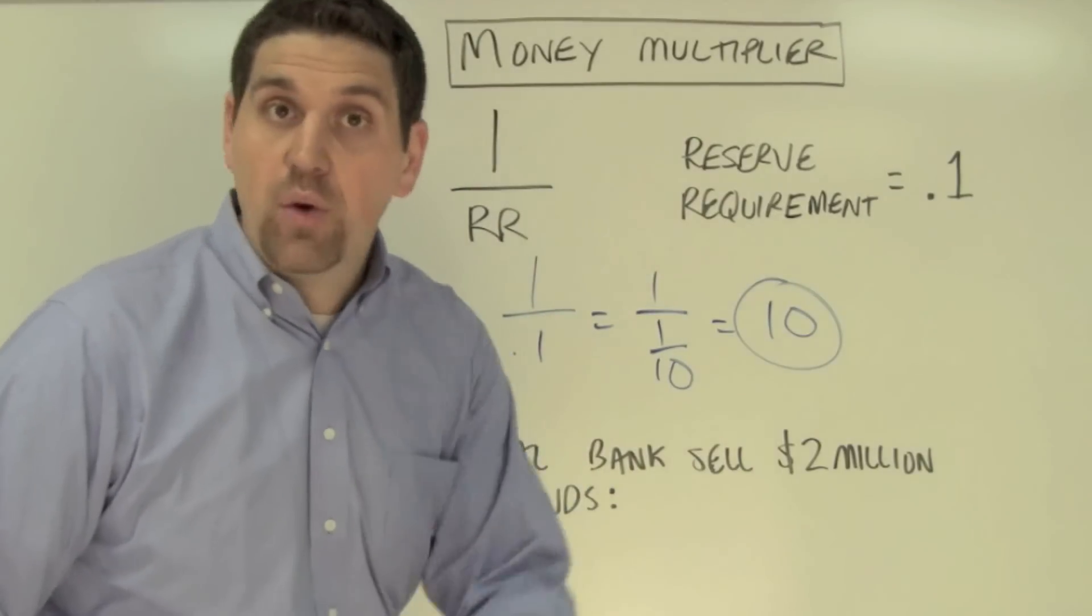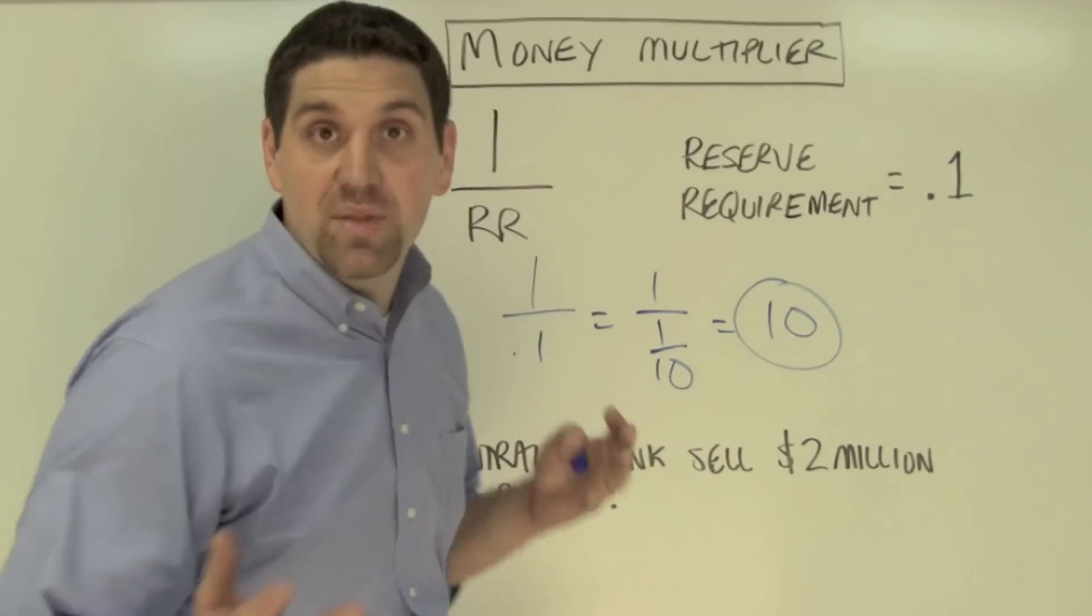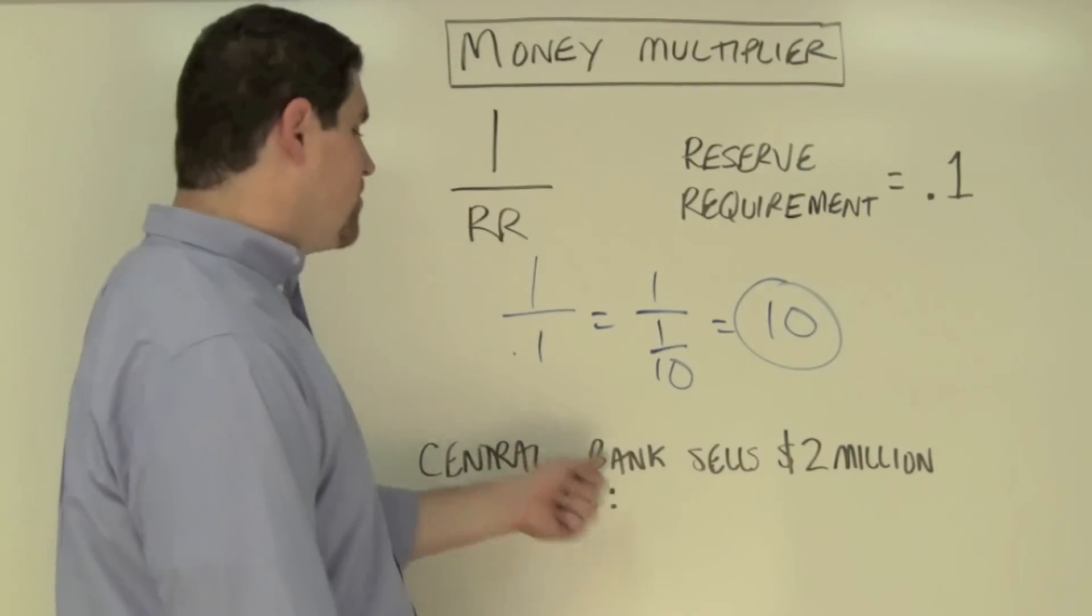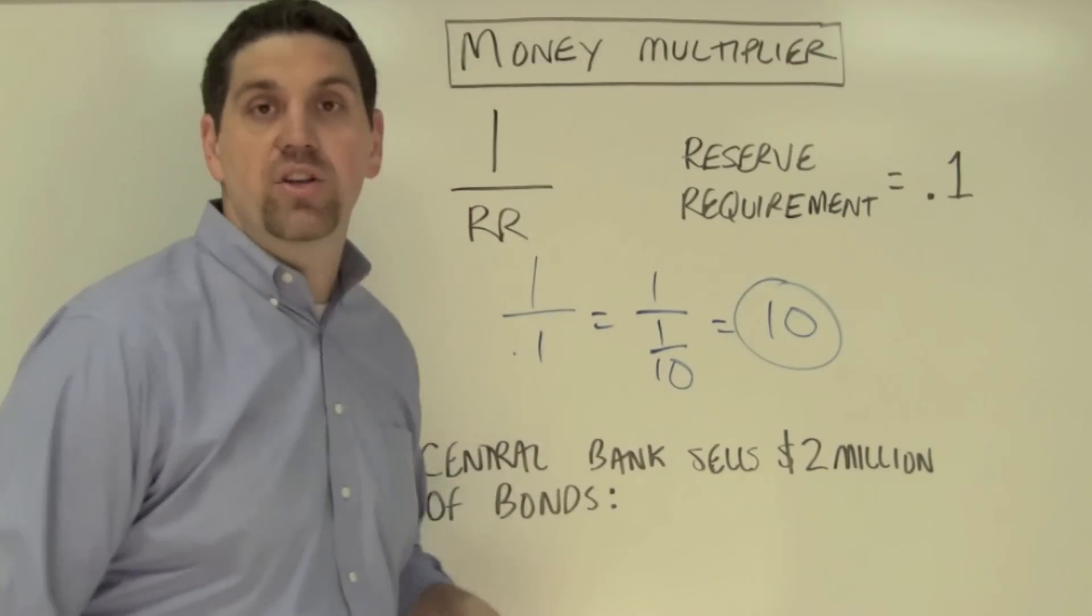So any initial increase or decrease in the money supply will get multiplied times 10. This question continues: the central bank sells $2 million worth of bonds.